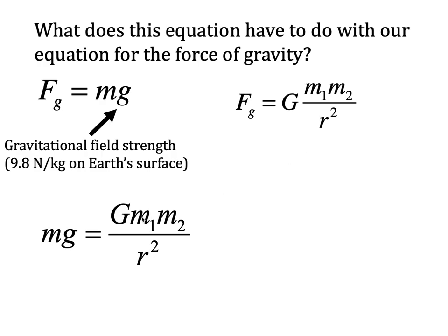And now look, one of these m's is the mass of the object, and the other one is the mass of the planet. Not necessarily a planet. And then when we have Fg equals mg, this is the mass of one of the objects, and then g is the local gravitational field strength. So what I'm getting at is this mass over here is the same as one of these masses over here.